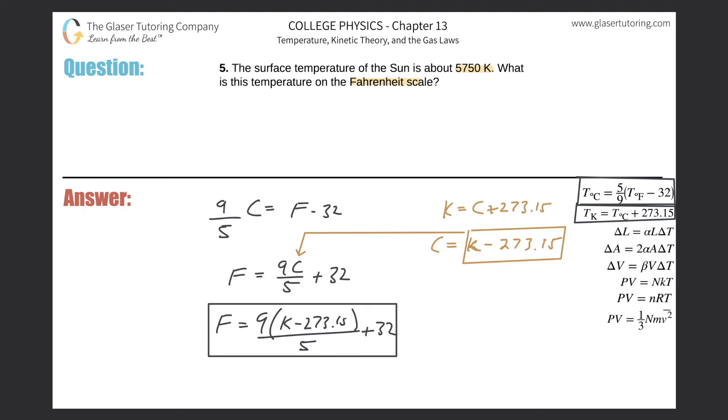All we now need to do is just plug in. So this is going to be nine multiplied by the Kelvin of 5750 minus the 273.15, all divided by five, and then add your 32 to it.